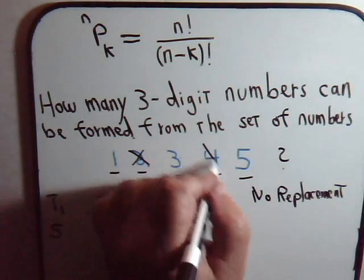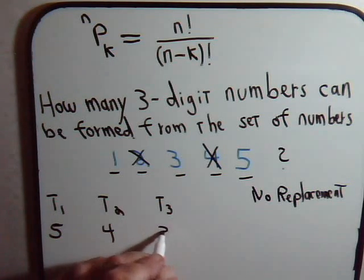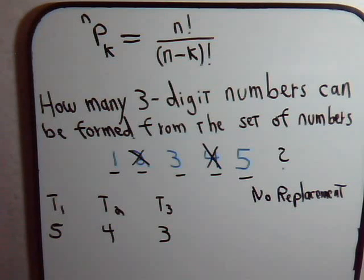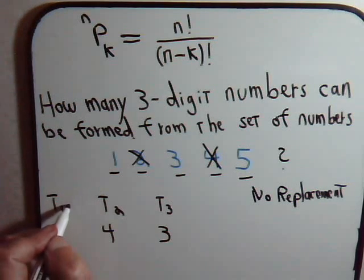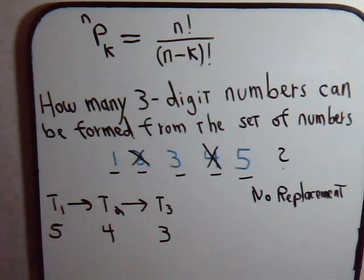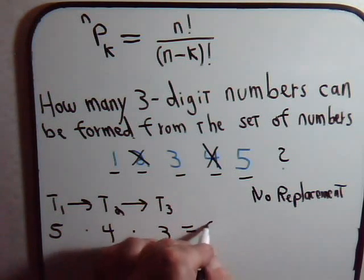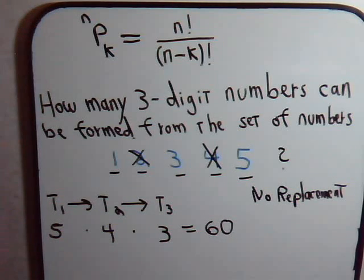Let's say we select the number four, so that now when we go to select the third number, there are three choices left, so there are three ways to perform task T3. So if we ask ourselves, if we're going to perform task T1 and T2 and T3, what's the total number of ways we can do that? That's five times four times three equals sixty. So there's sixty different three-digit numbers that we could form from this set.